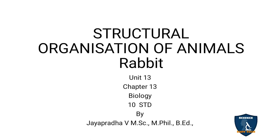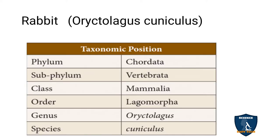Today we will discuss about rabbit in structural organization of animals. We have discussed about the invertebrate leech and now we are going to discuss about the rabbit, a mammal. The rabbit's zoological name is Oryctolagus cuniculus.